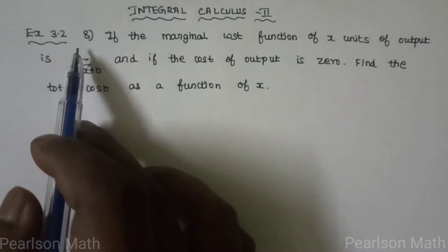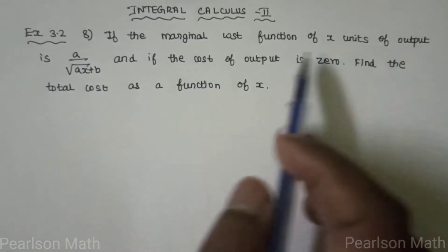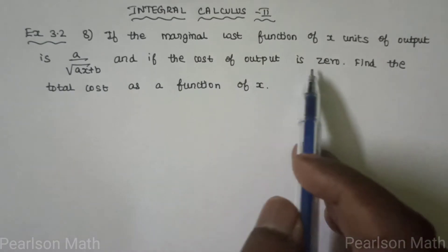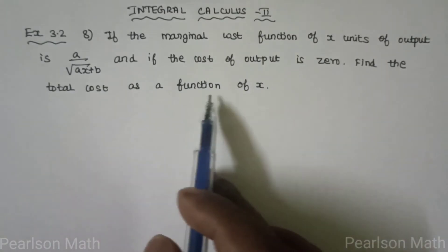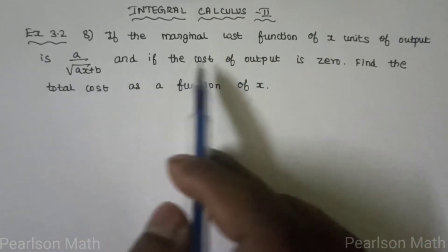Students, third chapter Integral Calculus II, Exercise 3.2(a). If the marginal cost function of x units of output is a by root of ax plus b, and if the cost of output is zero, find the total cost as a function of x.